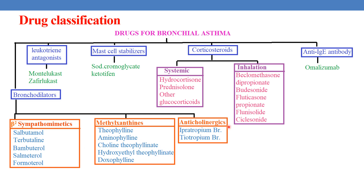And finally anticholinergics: ipratropium bromide and tiotropium bromide. The next class is leukotriene antagonists. The drugs are montelukast and zafirlukast. Next are mast cell stabilizers. The drugs are sodium cromoglycate and ketotifen.